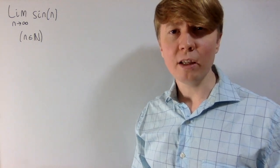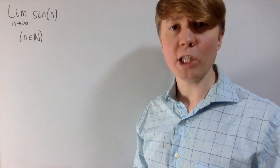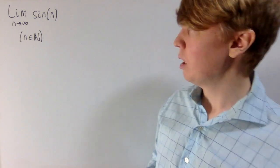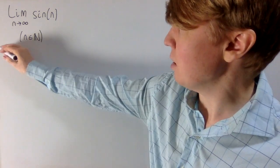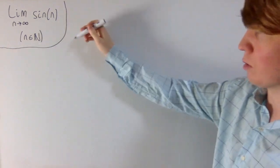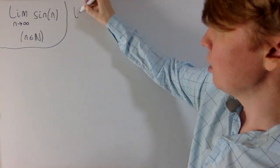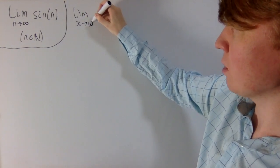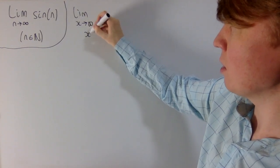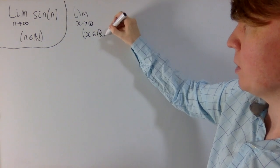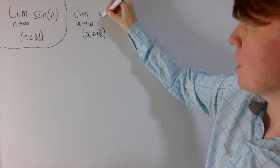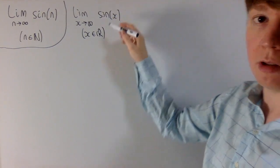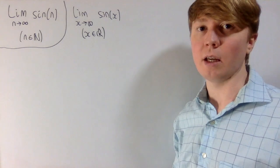We're going to have a look at the limit as n goes to infinity of sine of n, where all of the n's are integers. This is slightly harder than the continuous problem, where you were just looking at the limit as x goes to infinity of sine of x, where x is just any real number. It's slightly easier to show that this limit doesn't exist in the continuous case.